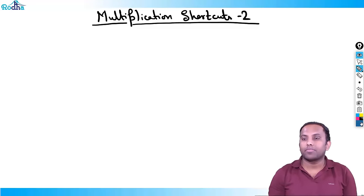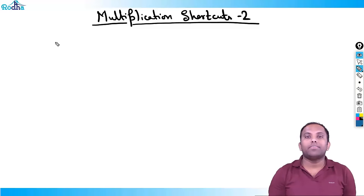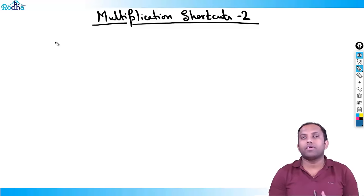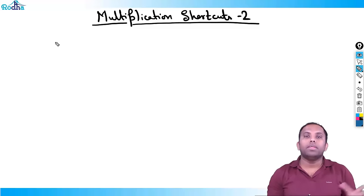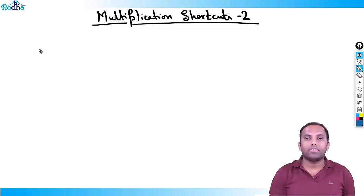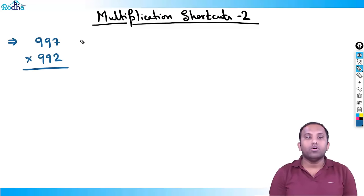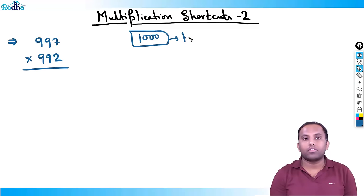Here we discuss, in continuation with the first video, multiplication with different bases. First we'll see with base 1000, as we have done all the varieties with base 100. Then we'll see how we can convert this concept to near base 200 or base 300. So let's start: suppose the given is 997 into 992 — it is close to base 1000.